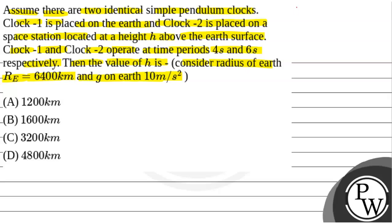First of all, we will see what the key concept is to solve this question. The key concept is the time period of a pendulum clock, T, given by 2π√(L/g), where L is the length of the pendulum and g is the acceleration due to gravity.